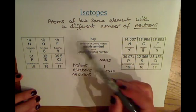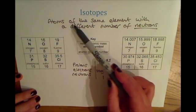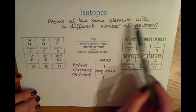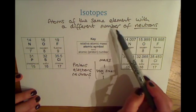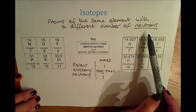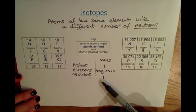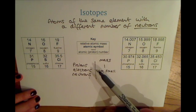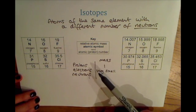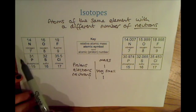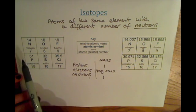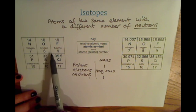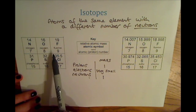An isotope is an atom of the same element with a different number of neutrons. It has to have the same number of protons, because if you change the number of protons in an atom you change the element itself.